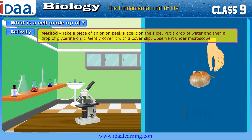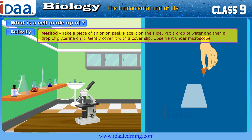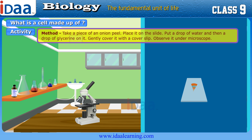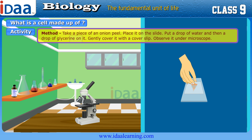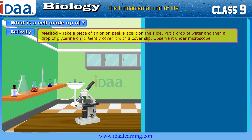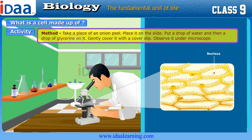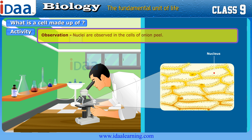Method: Take a piece of onion peel and place it on the slide. Put a drop of water and then a drop of glycerine on it. Gently cover it with a cover slip and observe it under the microscope. Observation: Nuclei are observed in the cells of the onion peel.